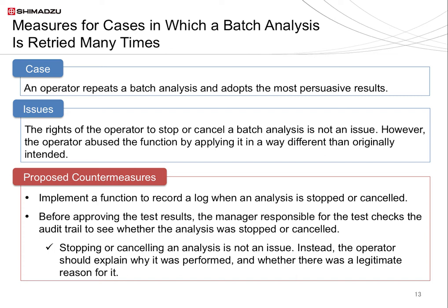However, the ultimate aim of this measure is not just checking the audit trail, since stopping or interrupting an analysis may be warranted. The important question is why the temporary stop took place. A computer system log will only record the fact that a temporary stop was implemented, since computers can only do what we tell them to do. Therefore, you need to question the operator to find out why they performed the temporary stop, and check if their reasoning is valid. The entire process up to this point must be formalized in SOPs, and proper records kept of the operator interview.